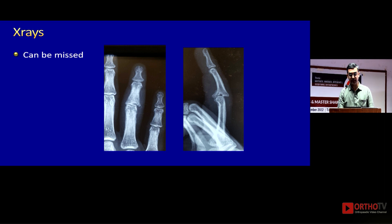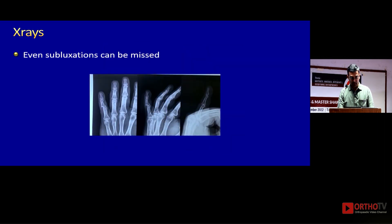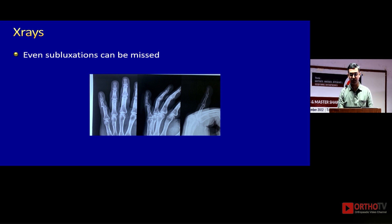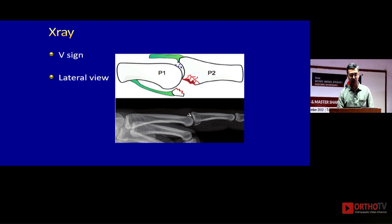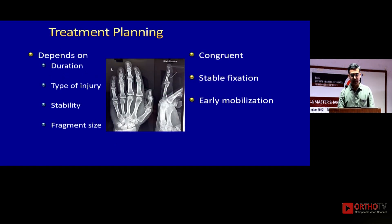The key x-ray for a proximal interphalangeal joint is a lateral x-ray of the finger, not a lateral x-ray of the hand. On a lateral x-ray you can see a fracture that is almost dislocated, involving a major part of the articular surface. Occasionally subluxation is seen only on the AP and oblique views, so for completion take AP, oblique, and lateral x-rays of the finger. You can also take a comparative view of the other finger, and check for the V sign on the dorsal aspect — if it's present, something is wrong.